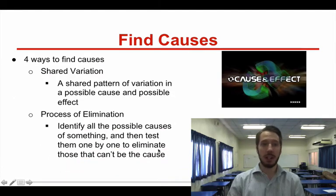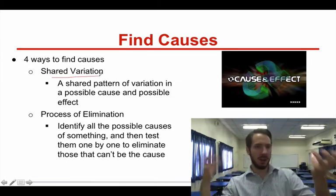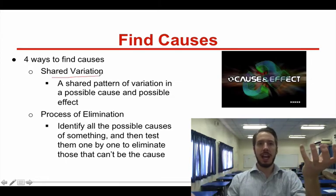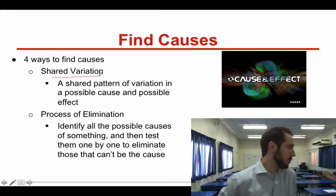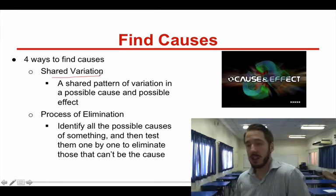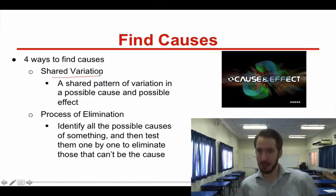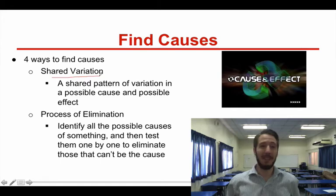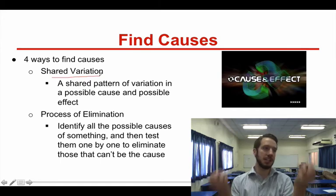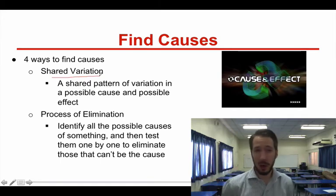You could also look at two different crime rate statistics from a city, and even though they're from the same city in back-to-back years, you could examine different situations or outcomes. Another way you can find causes is using a shared variation method — you have a possible cause and a possible effect, and you look at variations in between them. So if you're looking at different causes of war in the 21st century, you could look at particular causes that are similar but have various effects, looking for shared variation and similar themes.